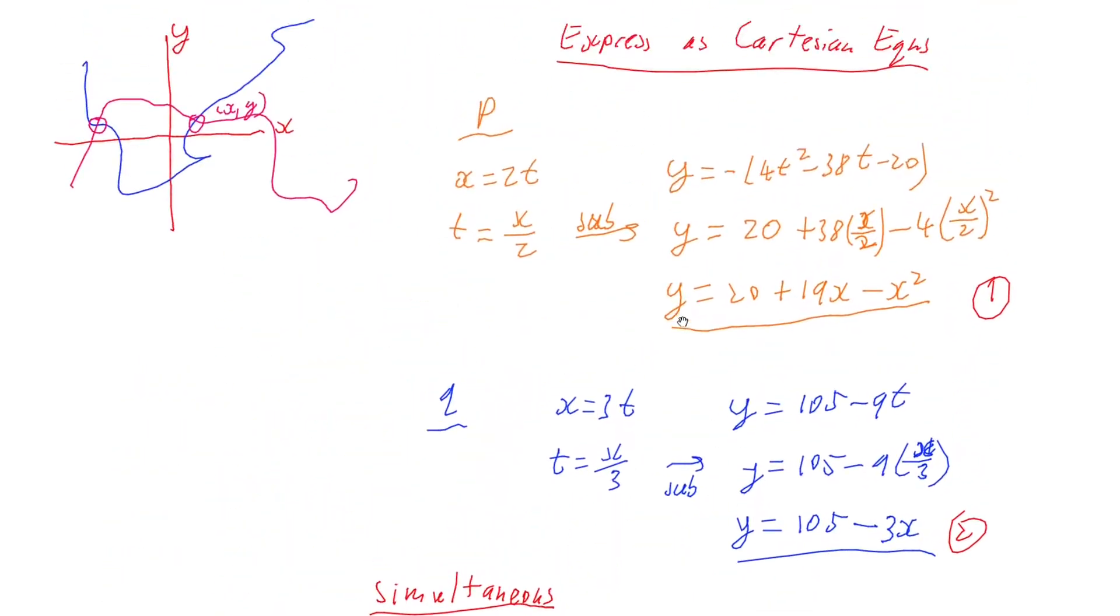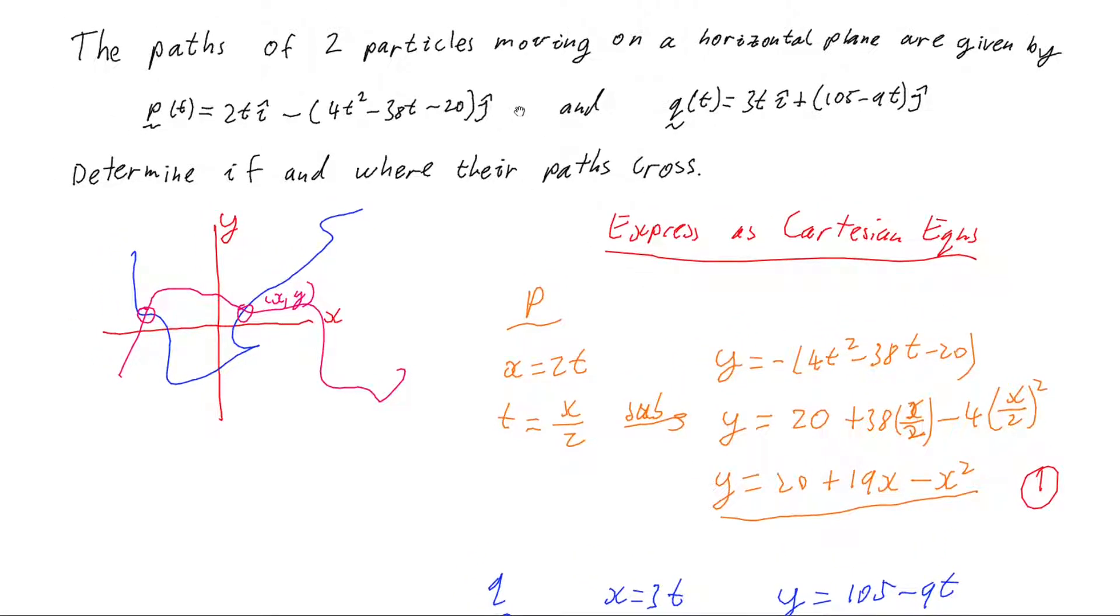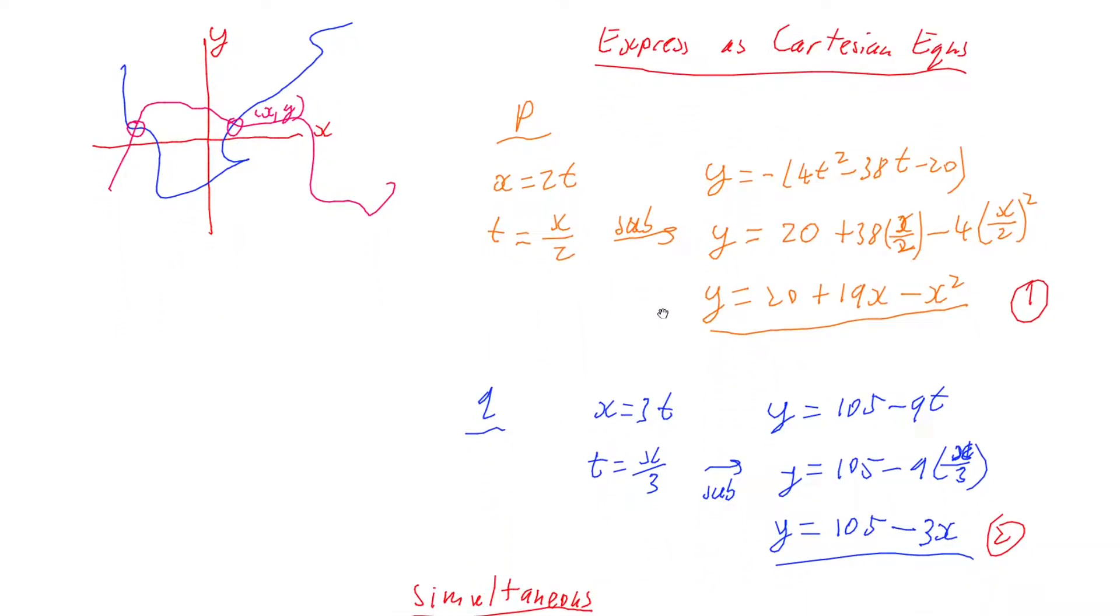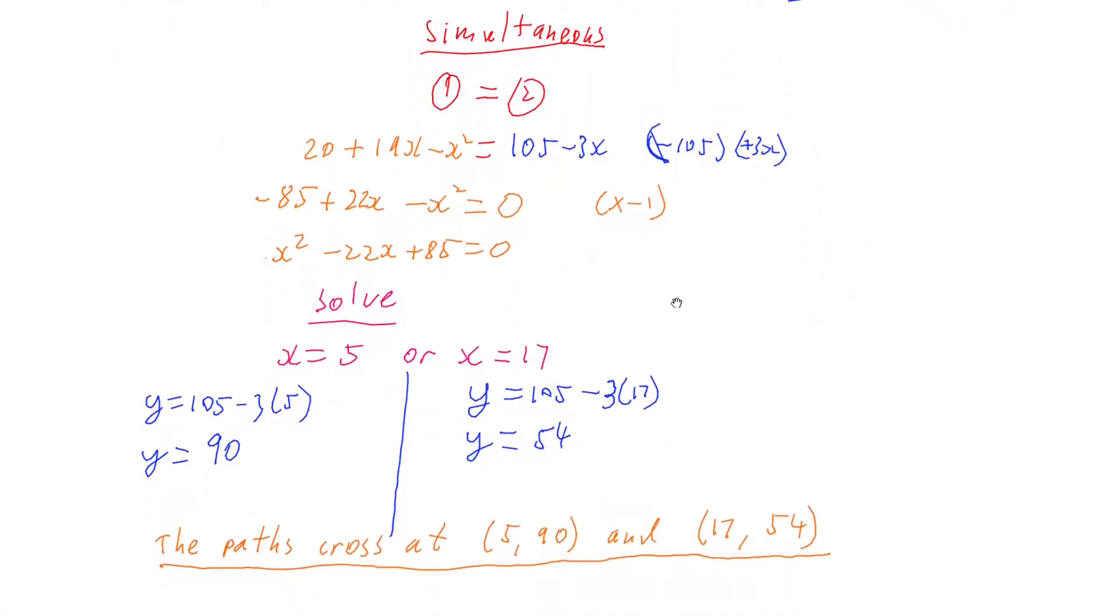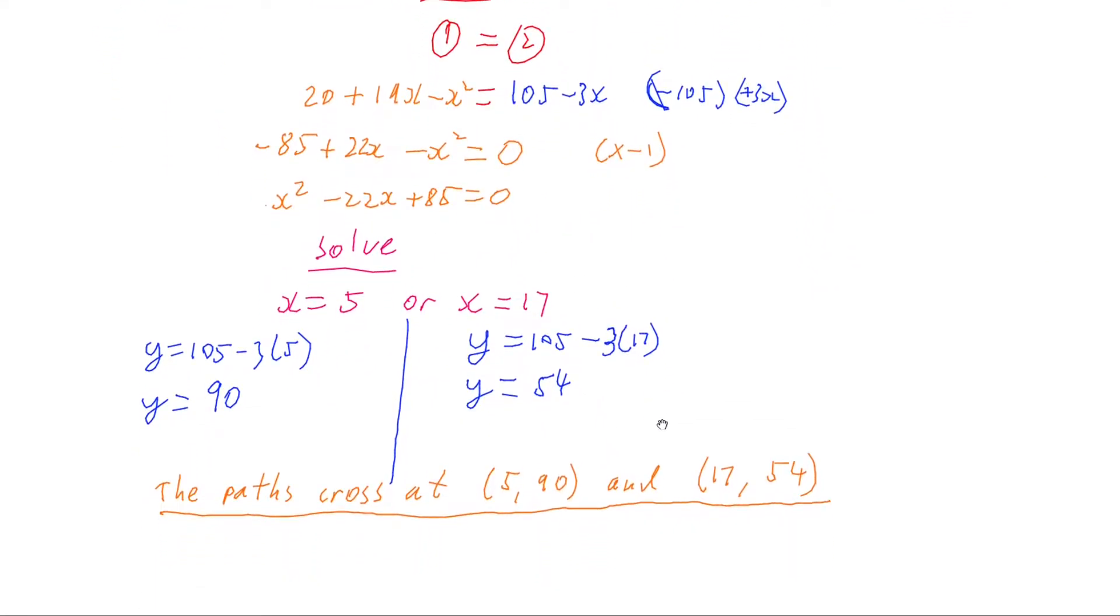So there we go. If we have the paths of particles given as vector equations and we want to know if they cross and where they cross, we get the equations into Cartesian form and then treat them as a simultaneous equation. If we get a solution they cross, and the coordinates of that solution is the crossing point.